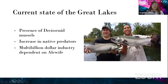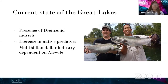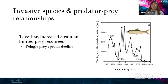Currently in the Great Lakes, we have this presence of dreissenid mussels — zebra mussels and quagga mussels — which are known to deplete the nutrients in the water column. We also have an increase of native predators due to management, and with the introduction of salmon, we now have this multi-billion dollar industry dependent on alewife. Together, this strains limited prey resources. In the early 2000s, we see that the alewife population crashed, particularly in Lake Huron, and we believe this could possibly happen in Lake Michigan and endanger the salmon industry.